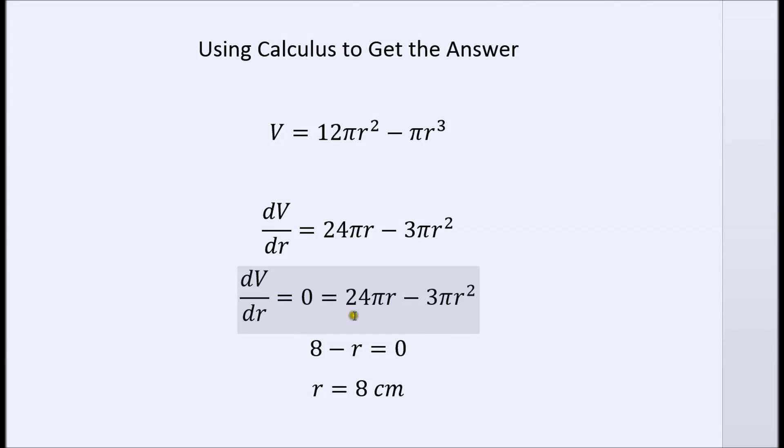And the slope will be zero at the maximum. So we set it equals zero. We can cancel out the 3 and pi to get 8 minus r equals zero and r equals 8 centimeters. So the maximum would be 8 centimeters. And of course, if r is 8, then h is 4 because the sum has to be 12.